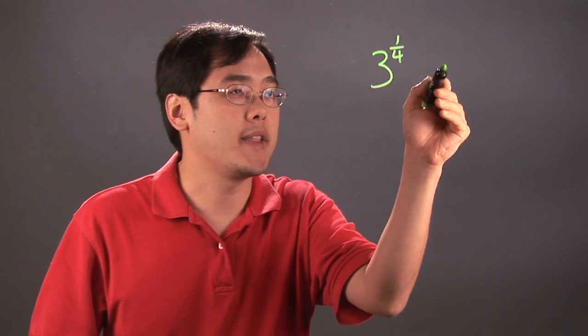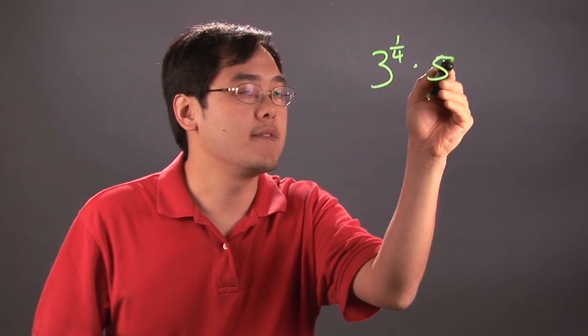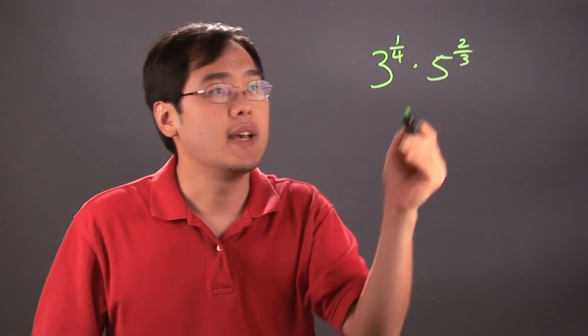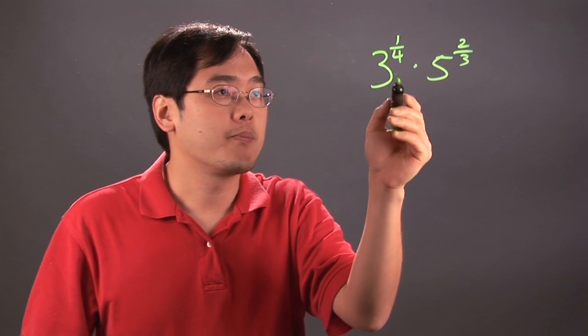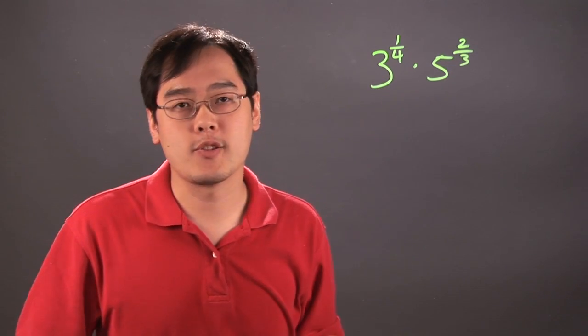Suppose you have 3 to the 1/4th and you want to multiply that by 5 to the 2/3rds. Now these are integers, they're different bases, and they're both to fraction powers.